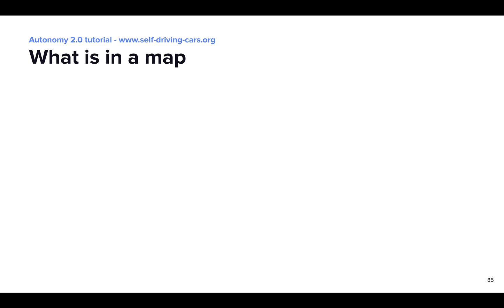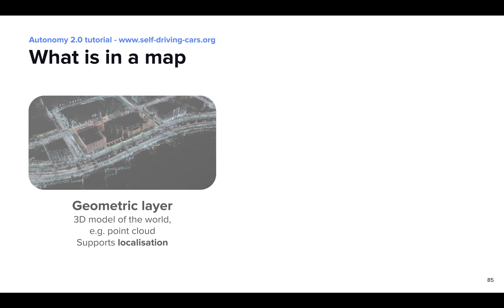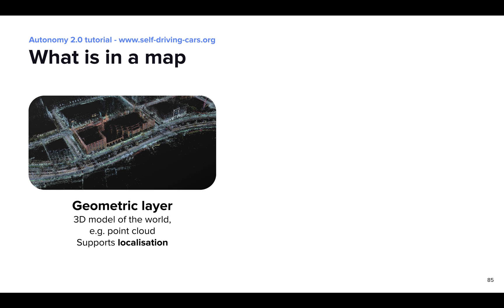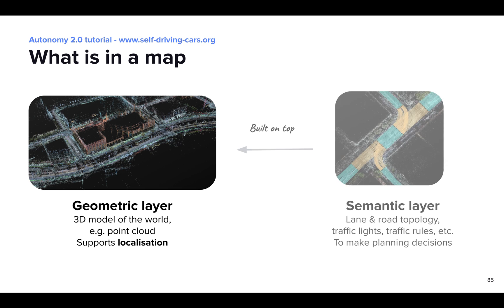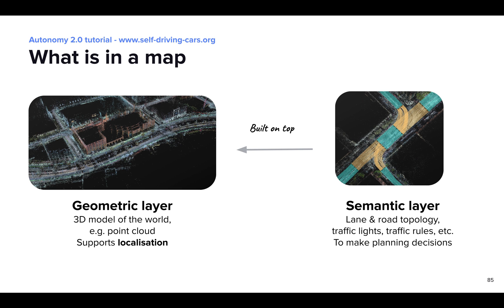HD maps consist of two main parts. First, a 3D geometric map, which is essentially a 3D model of the world, for example a point cloud, that SDVs typically use for localization. The second part is the semantic map, which contains information on traffic lights, road markings like lanes, traffic rules like yield relationships, etc. And this semantic information is all overlaid on top of the geometric map.